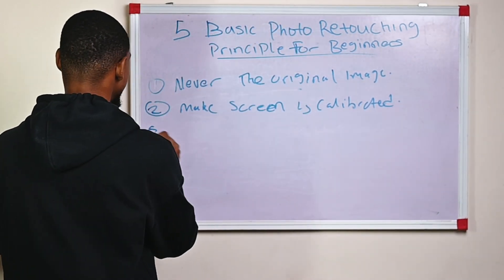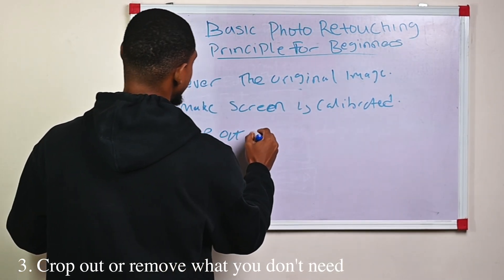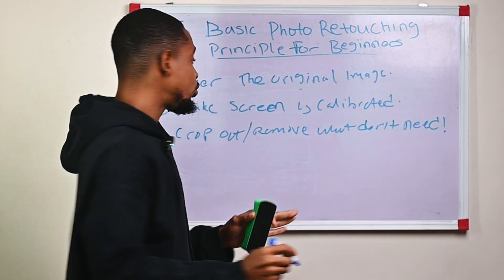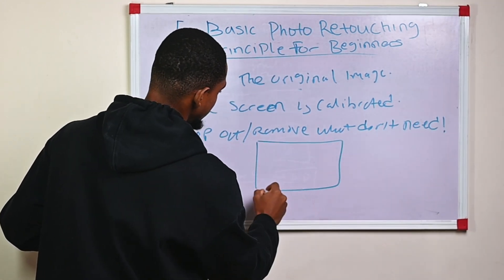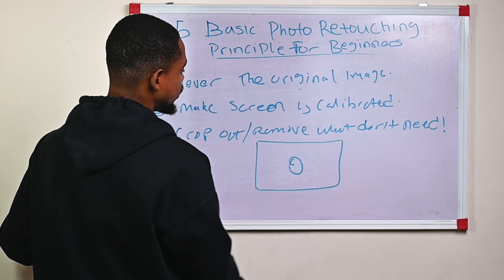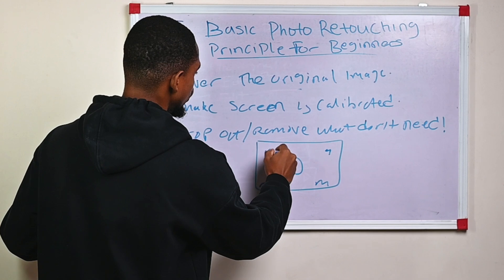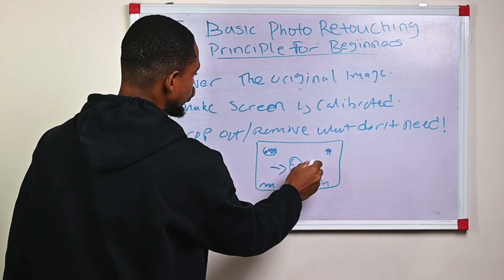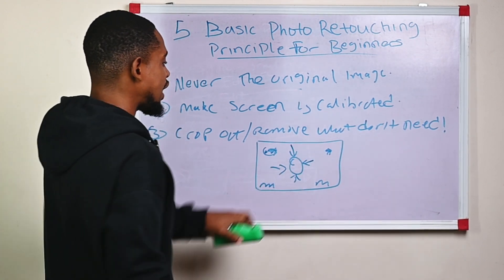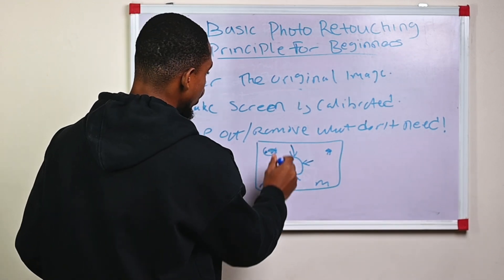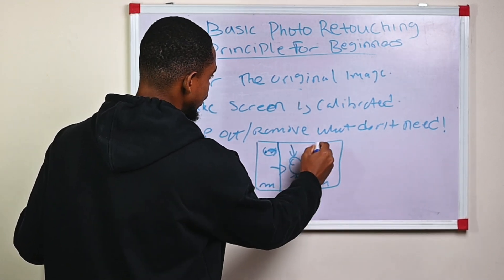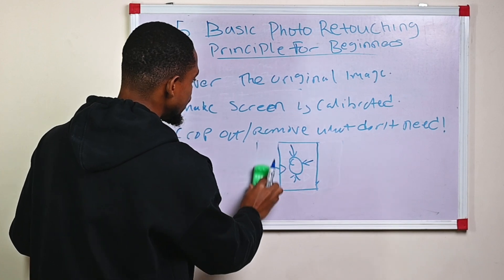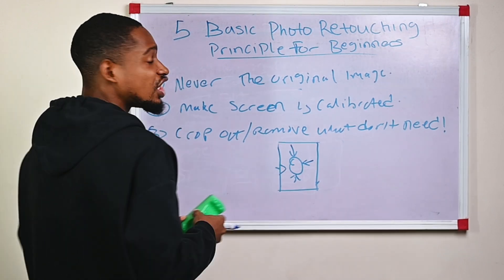Principle number three is to crop out or remove what you don't need in your image. If there are distractions on your image, you can either remove them so the viewer's eyes are drawn to your subject, or if you can't remove them, you can just crop the image so the distractions are no longer there and only your subject remains in focus.